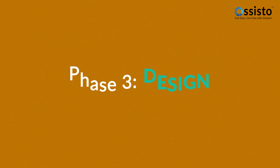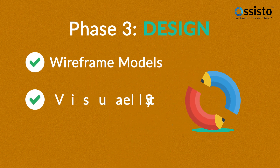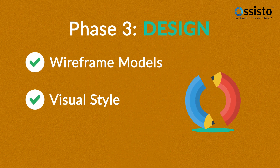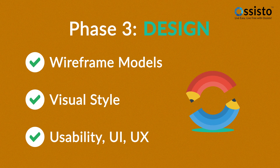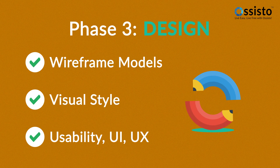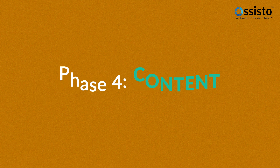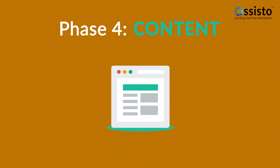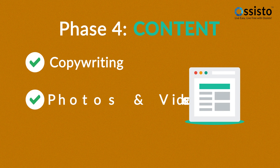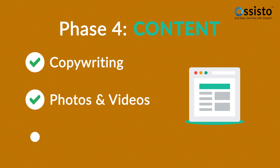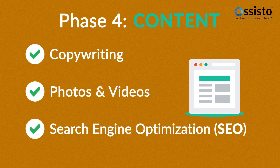Phase 3: Design. Not only do we focus on wireframe models and the visual style in this stage, but also on the usability of the user interface for the best possible user experience. Phase 4: Content. A very important part of the process is choosing the right text, photos, or videos — all optimized not only for your visitors, but also for search engines.